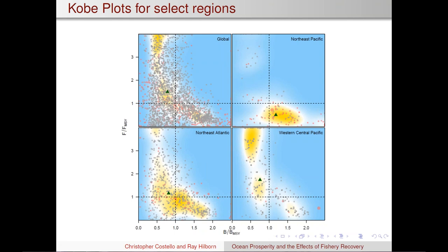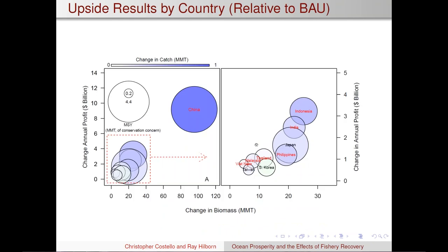I've also plotted COBE plots for different regions. The top-right panel — think of it as Alaska — those stocks are generally in quite good shape. The bottom-left — think Europe — shows a real mix, with many fisheries in transition. The bottom-right — think Asia — shows a lot of stocks that are heavily overexploited.